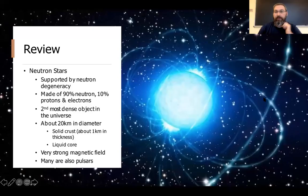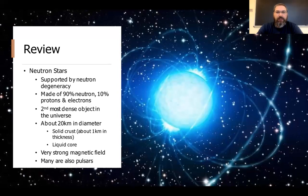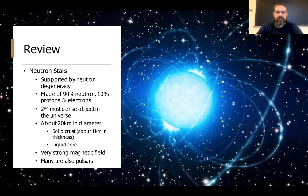As a review, we talked about neutron stars last time. Supergiants can end their lives with a massive explosion called a supernova, and the remnant left behind can be a neutron star. Neutron stars are mostly composed of neutrons packed in nice and dense, and they're the second most dense object in the universe. They're typically about 20 kilometers in diameter — about 13 miles — with very strong magnetic fields.